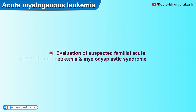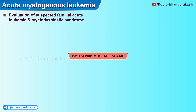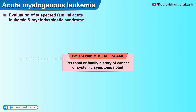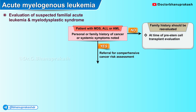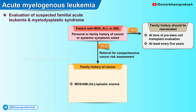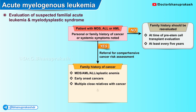This section covers evaluation of suspected familial acute leukemia and myelodysplastic syndrome. Patients with myelodysplastic syndrome, acute lymphoblastic, or acute myelocytic leukemia should be evaluated with a proper history. If a personal or family history of cancer or systemic symptoms are noted, such patients should be referred for a comprehensive cancer risk assessment. If no such history is available, family history should be reevaluated at the time of pre-stem cell transplant evaluation and at least every five years. Patients with a family history of MDS, acute myelocytic or lymphoblastic leukemia, aplastic anemia, certain early-onset cancers, or multiple close relatives with cancer along with systemic findings should be further evaluated.